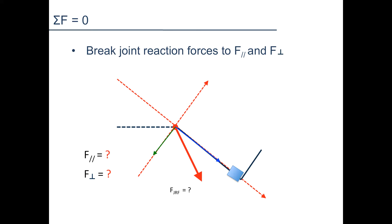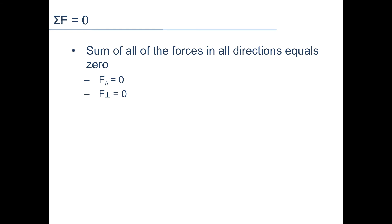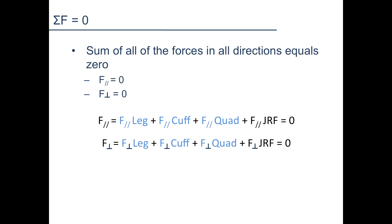The last force to consider is the joint reaction force. Unfortunately, we don't know anything about this force, but we can solve for it using what we know about the other forces. Since the knee is not moving, the sum of all forces acting on the object will add up to zero. This means all forces in the direction parallel to the leg add up to zero, and all forces perpendicular to the leg add up to zero. In the perpendicular direction, we have components of the weight of the leg and foot, weight of the cuff weight, quadriceps force, and joint reaction force. Since we already know all components except for the joint reaction force component, we can solve for it.